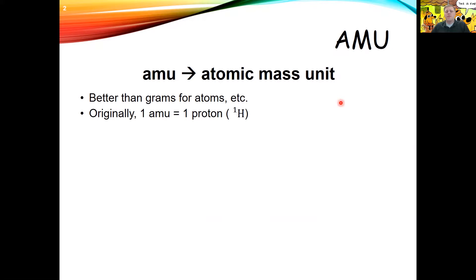As we talked about previously, it's not very convenient to measure the mass of atoms or molecules in terms of grams, because these things just don't take a lot of grams — they're not very massive by themselves. And so we came up with a new convention, a new unit of weight called the AMU, or atomic mass unit.